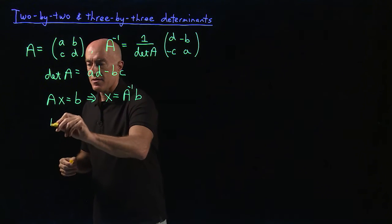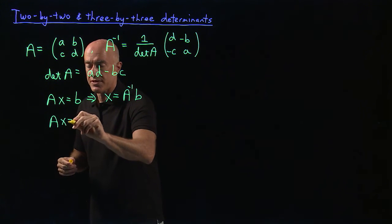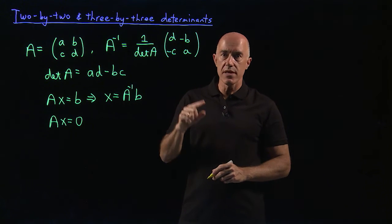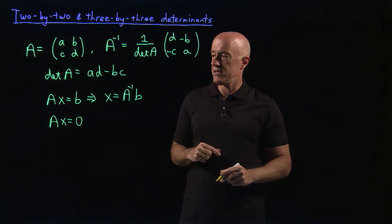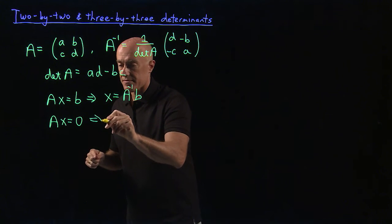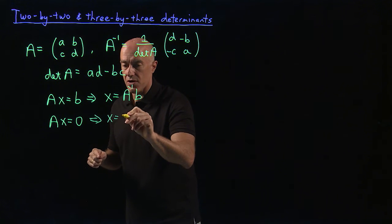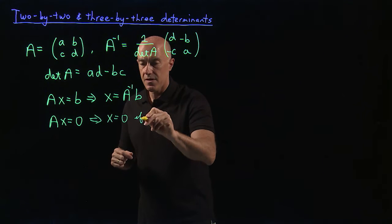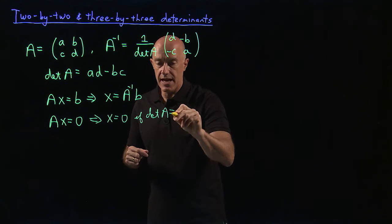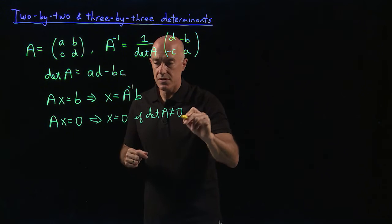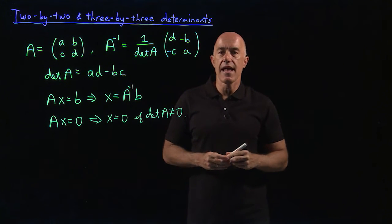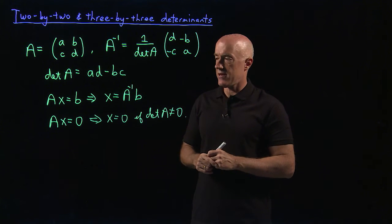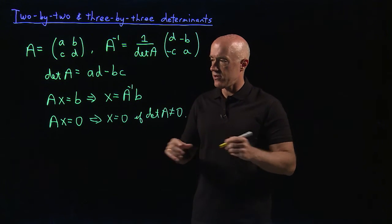In particular, the equation Ax equals zero, if A is invertible, has only one solution, which is x equals zero. So that implies x equals zero, the zero column vector, if determinant of A was not equal to zero. And that actually will be a very important result when we talk about eigenvalues and eigenvectors later in this course.